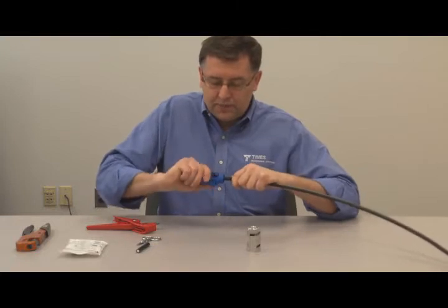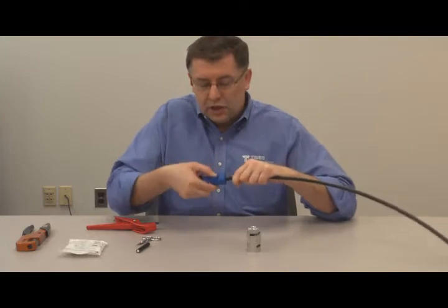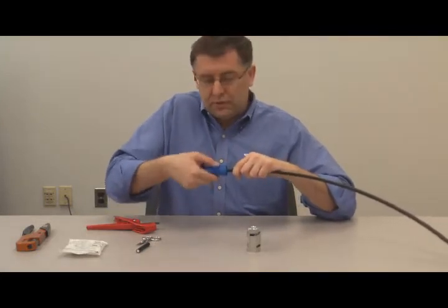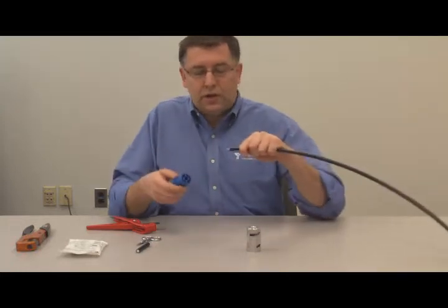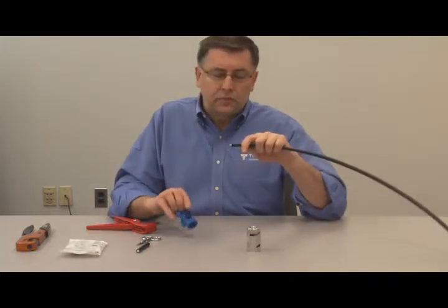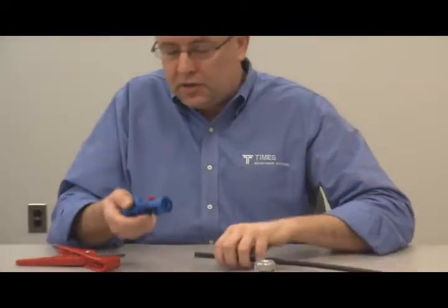you apply pressure on this blade cartridge and spin it around the cable three or four times. Just pull, and you remove the material from the end and expose this under-conductor. You flip it around to side two.